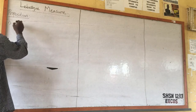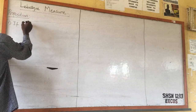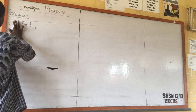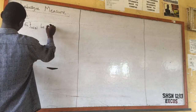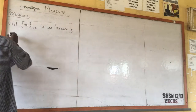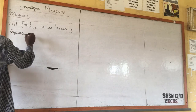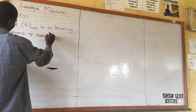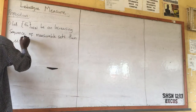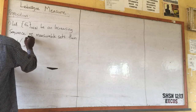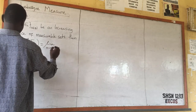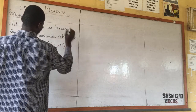The first proposition: let E_n be an increasing sequence of measurable sets. Then the measure of the union from N = 1 to infinity of E_n will be equal to the limit as N goes to infinity of the measure of E_n.